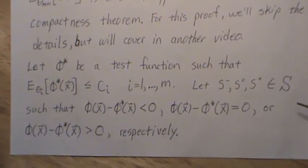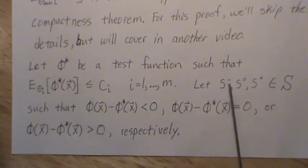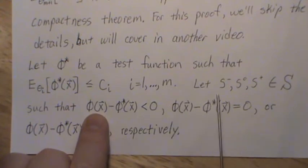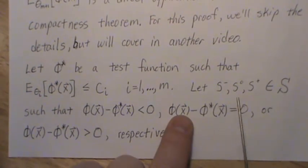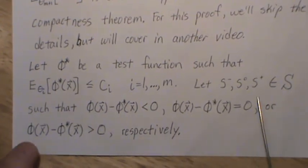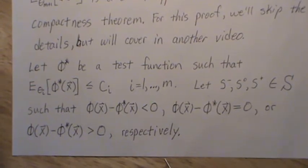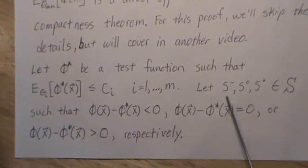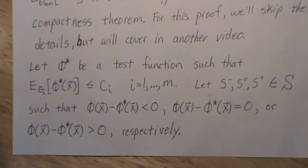We're going to create three mutually exclusive disjoint sets of our sample space: S minus, S zero, and S plus. If the x's live in S minus, then this difference of test functions is negative. If the x's are in S zero, then the difference of these test functions is zero. If the x's live in S plus, then the difference of these test functions is positive. These three subsets will change depending upon what test function we use, but the structure of S minus, S zero, and S plus stays the same — it deals with the difference of these tests.